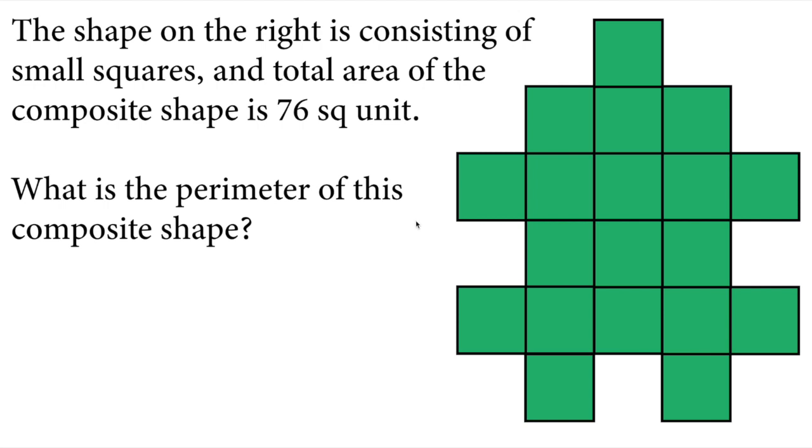Hi there. In this video, we will answer this 5th grade math olympiad question. Let's read the question. The shape on the right consists of small squares, and the total area of the composite shape is 76 square units. What is the perimeter of this composite shape?